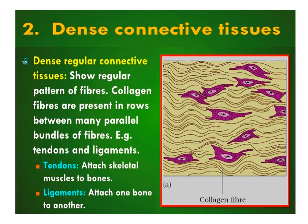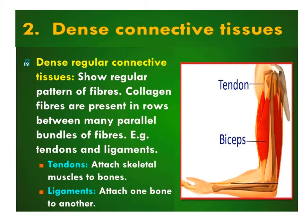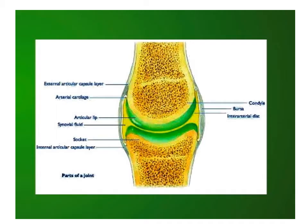Dense regular tissue: the collagen fibers are present in rows between many parallel bundles of fibers. Examples include tendons and ligaments. Tendons attach skeletal muscles to bones, while ligaments attach one bone to another.